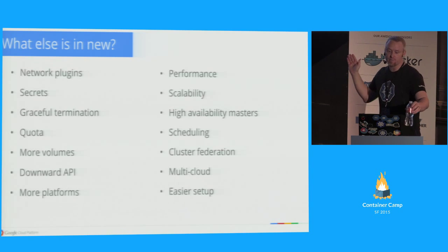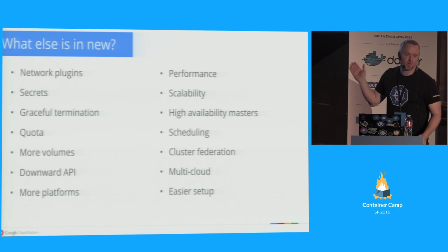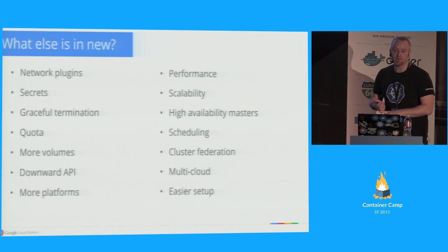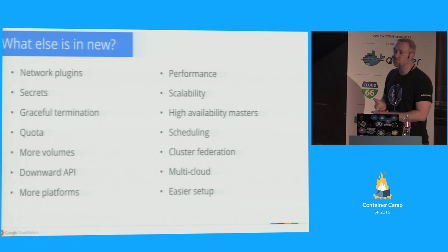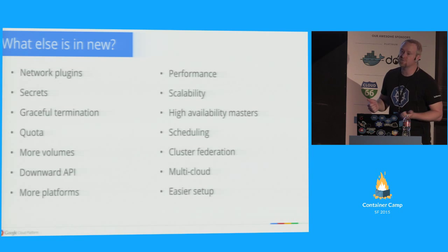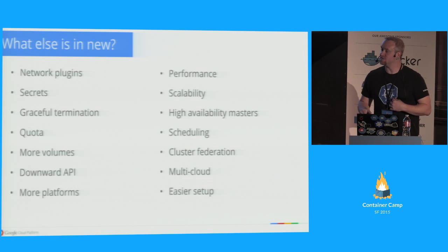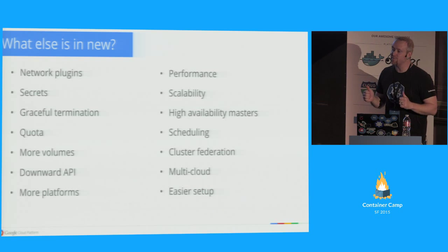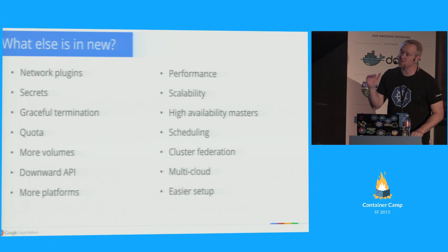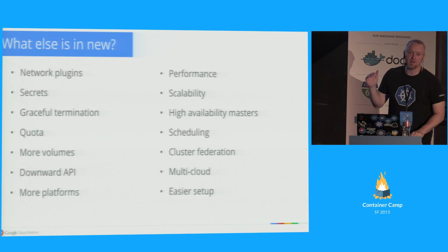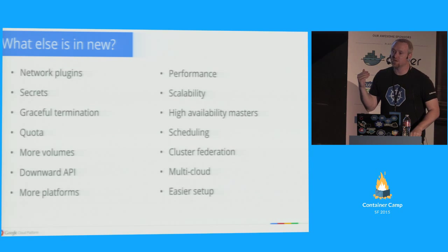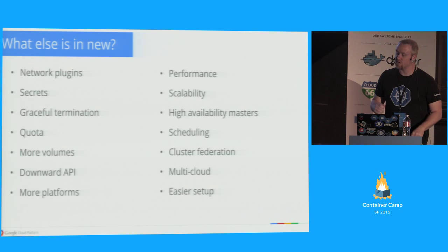There are a bunch of other things going on in Kubernetes: network plugins, a secrets API for authentication, graceful termination, quota, more volume types, new downward-facing APIs so applications can learn more about how they've been run, and more platform support. Performance is going up — we're already meeting our 1.0 performance goals and looking at how to grow beyond that. We're also working on scalability, high availability, better scheduling, cluster federation — taking two clusters in different clouds and having them work together — streamlining setup, and batteries-included sorts of stuff.